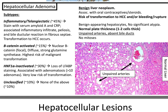Hepatocellular adenoma. This is a benign liver neoplasm associated with oral contraceptives and steroids. There is risk of transformation to hepatocellular carcinoma and/or bleeding and rupture. Histologically, there are benign-appearing hepatocytes without significant atypia, normal plate thickness around 1-2 cells thick, unpaired arteries, absent bile ducts, and no mitoses. There are four subtypes. The most common is inflammatory/telangiectatic, making up around 45%, which stains with serum amyloid A and CRP, with associated inflammatory infiltrate, peliosis, and bile ductular reaction in fibroseptae. Transformation to hepatocellular carcinoma can occur.